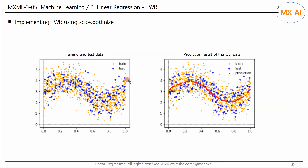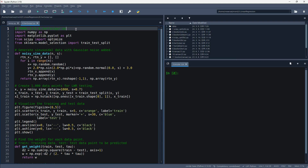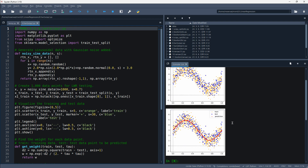Let's take a look at the results. The training and test data are like this. The predicted curve for the test data points looks like this. You can see that the original sine curve is well predicted. Let's run this code. The results are as follows.